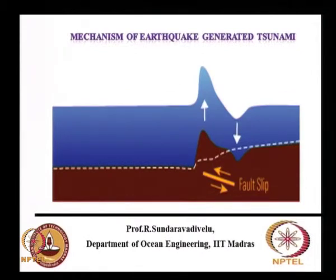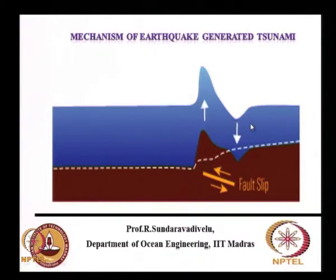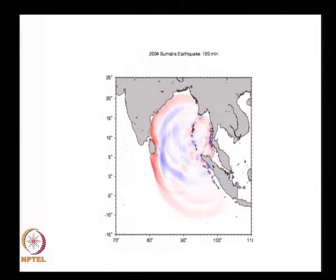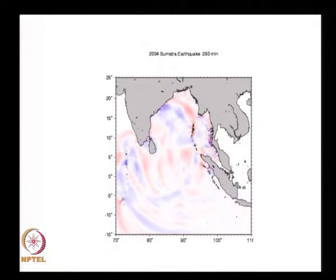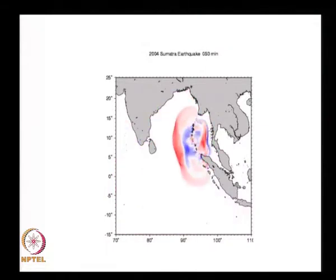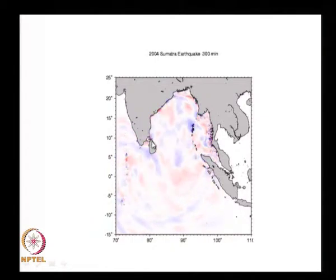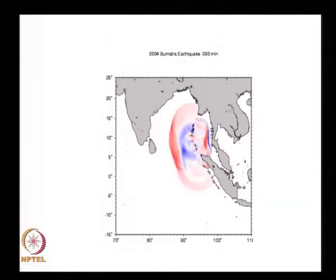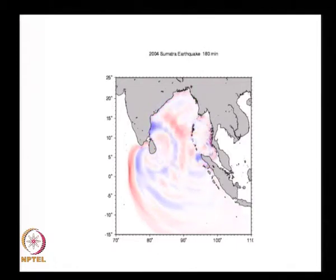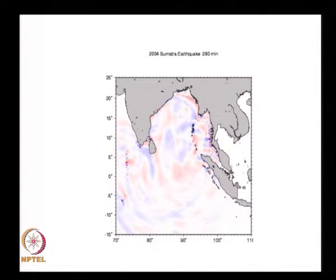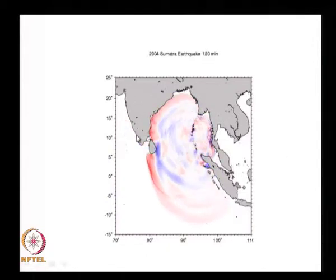Moving on to tsunami — it is caused by an earthquake when two tectonic plates, one going down and one going up, generate a wave called a tsunami. This figure shows how the tsunami is generated and travels to different places. When it comes to Sri Lanka it diffracts, and diffraction waves also reach the Kerala coast. Some areas are in a shadow zone with less disturbance.